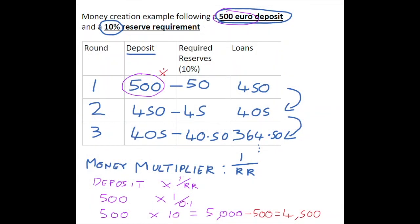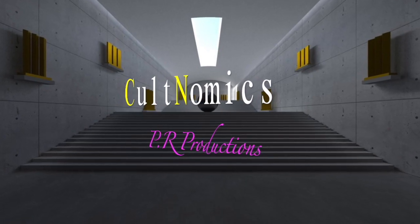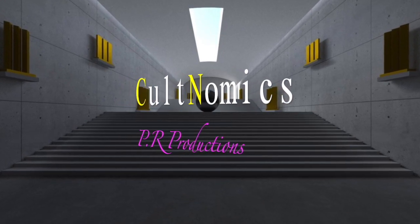So from an initial deposit of €500, the amount of potential money that could be created in total would be €4,500. I hope you'll come back to Cultnomics soon — bye for now.